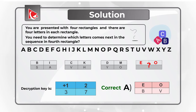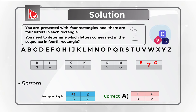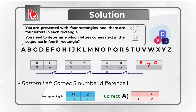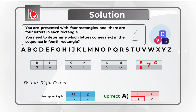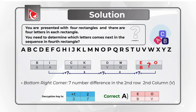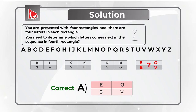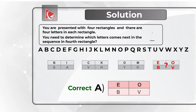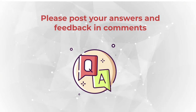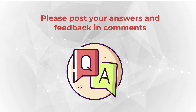The question is also designed so you can continue the logic for the bottom row. The bottom left corner has a 3-number difference, which would give letter B, and the bottom right corner has a 7-number increment, giving letter V. As already mentioned, the correct choice is choice A. Hopefully you've learned about simple encryption and decryption logic you can use with letters of the alphabet.